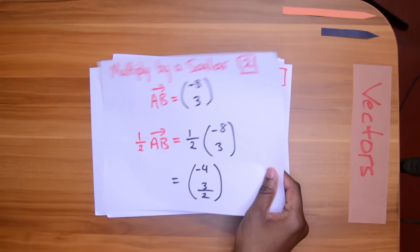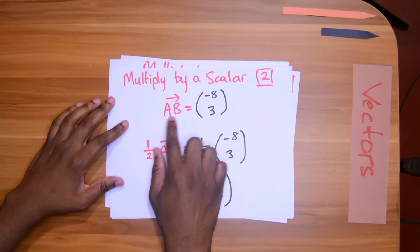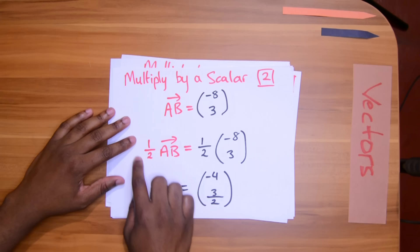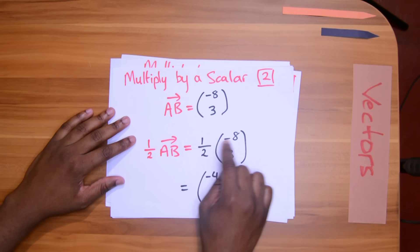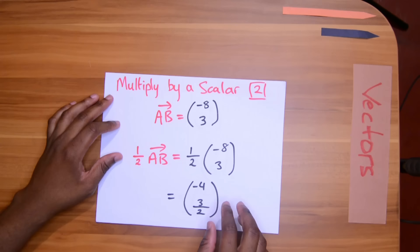Let's look at another version of multiplying by a scalar. AB is set at (-8, 3). Half of AB, the half here represents the scalar or the number outside of the vector. And similarly to the last example, the half will multiply by the -8 and by the 3. Half of -8 is -4. Half of 3 is 3/2. And as you know, when dealing with matrices and vectors, we try to keep things in fractions rather than go to decimals.